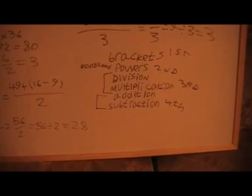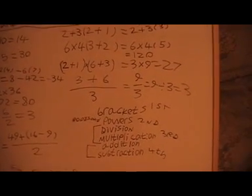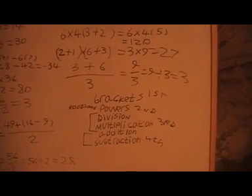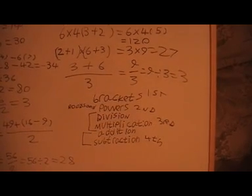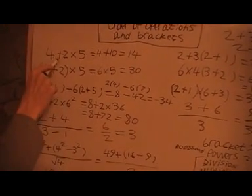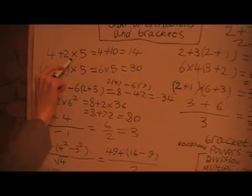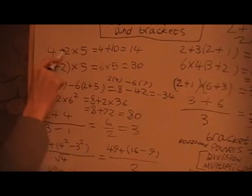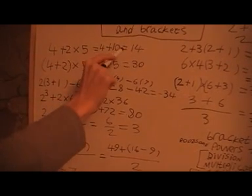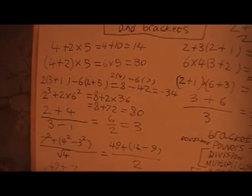We do the things inside the brackets first. This is the order of operations. Some calculators would do 4 plus 2 and then times it by 5 and get 30. But a scientific calculator should always get 14, because it should follow the order of operations.